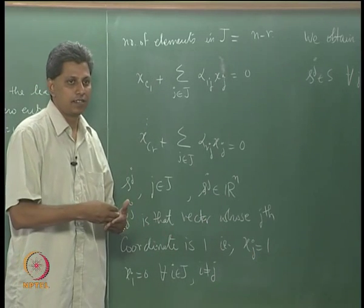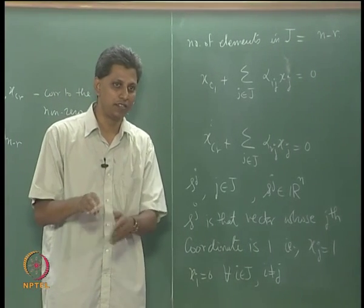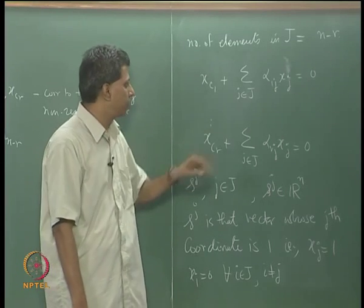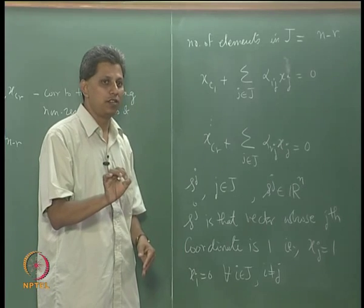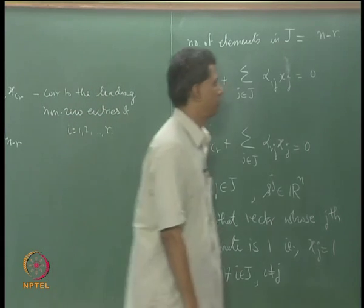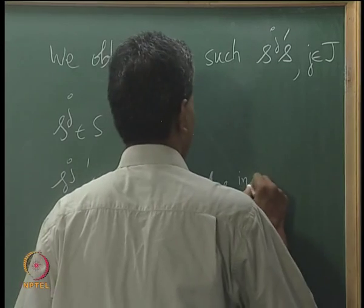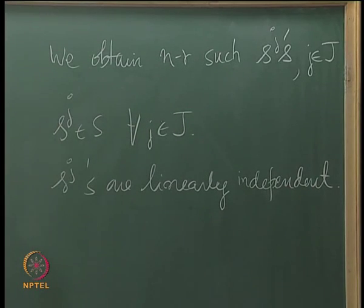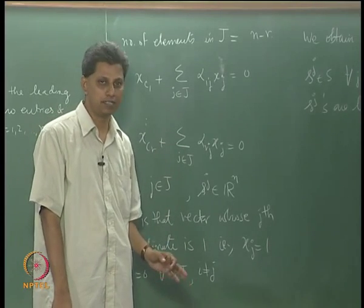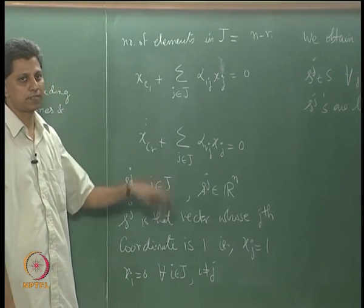These s^j vectors are linearly independent. The reason is very similar to the standard basis vectors being linearly independent: s^j has a 1 in the j-th free-variable position and 0 in all other free-variable positions. This 1-and-0 structure forces linear independence. So the s^j's are linearly independent, and I am trying to prove the solution space S has dimension n minus r by finding an explicit basis.